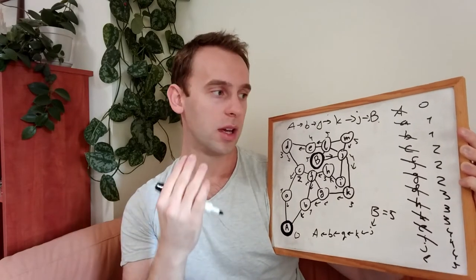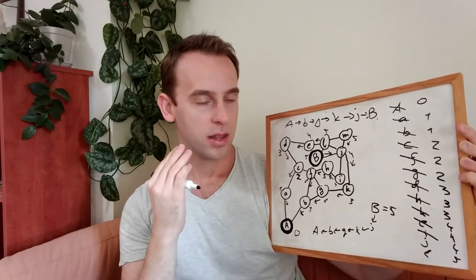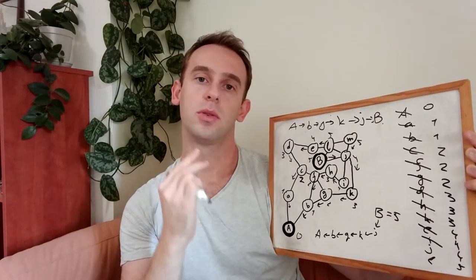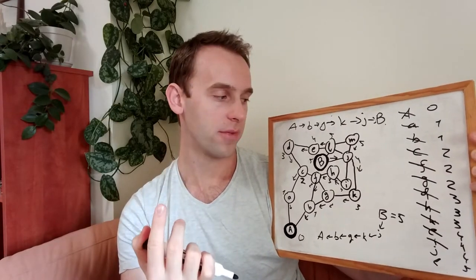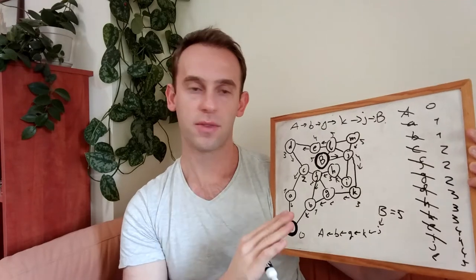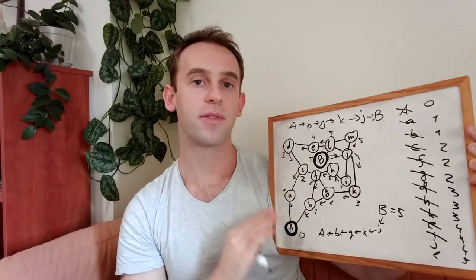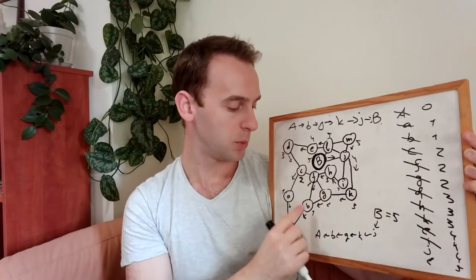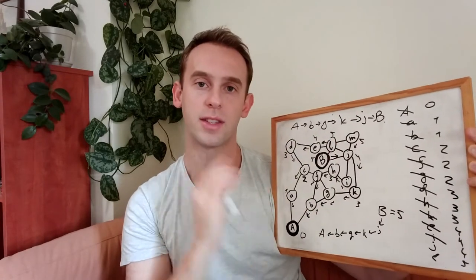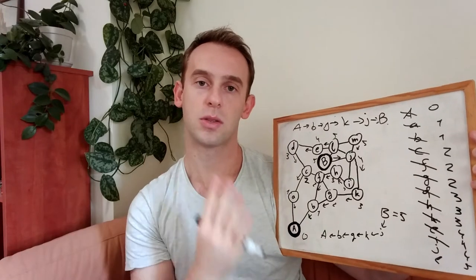We will see in the next episode when we will talk about Dijkstra. This is the idea that we will want to implement in more complicated graph. For now, this is enough. And you can see that the BFS found the shortest path from A to B when all the distances between each and every node are the same. Here I assumed it is one.